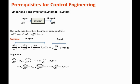If the system is linear and time-invariant, we have a differential equation describing the output from the input. To solve for the output for a given input, we must solve this differential equation — however, solving differential equations is tedious. There are two other commonly used methods in control engineering: the convolution of the impulse response, and the transfer function in the Laplace domain.